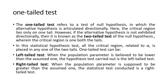A one-tail test refers to a test of the null hypothesis in which the alternative hypothesis is articulated directionally. The critical region lies only on one tail. However, if the alternative hypothesis is not expressed directionally, then it is known as the two-tailed test of the null hypothesis, wherein the critical region lies on both tails — either on the negative side or towards the positive side. All the critical region related to alpha is placed in any one of the two tails.